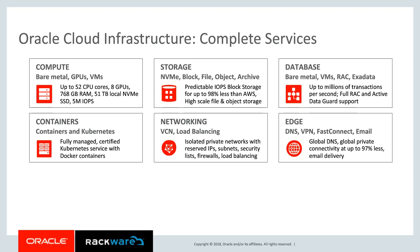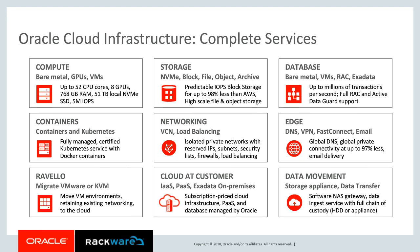We have a database service for Oracle databases in all flavors — Singleton, RAC configuration, or Exadata. We have a super-performant networking layer, containers, Kubernetes as a service, and edge applications for DNS management, VPN connectivity, and high-bandwidth low-latency connectivity between your data center and Oracle. We also offer Cloud at Customer — an entire Oracle cloud stack running in your data center — for cases where you want to keep some applications on-premises while migrating others.